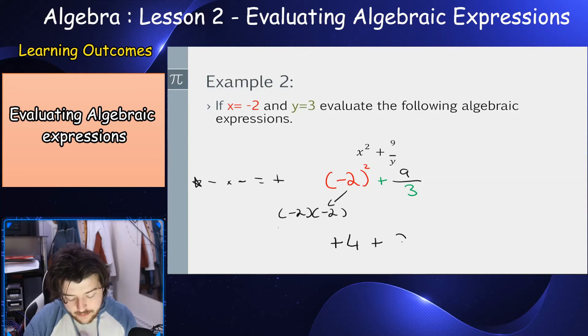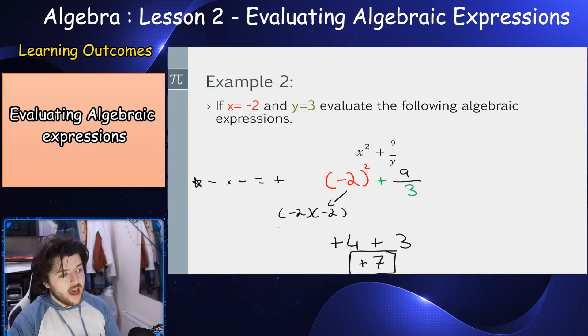So minus 2 times minus 2, well that's going to turn to a plus 4. And then 9 over 3, that's the same as 3. So 9 divided by 3, 3 goes in 3 times. Then 4 plus 3, our answer is positive 7. And that's our expression evaluated.